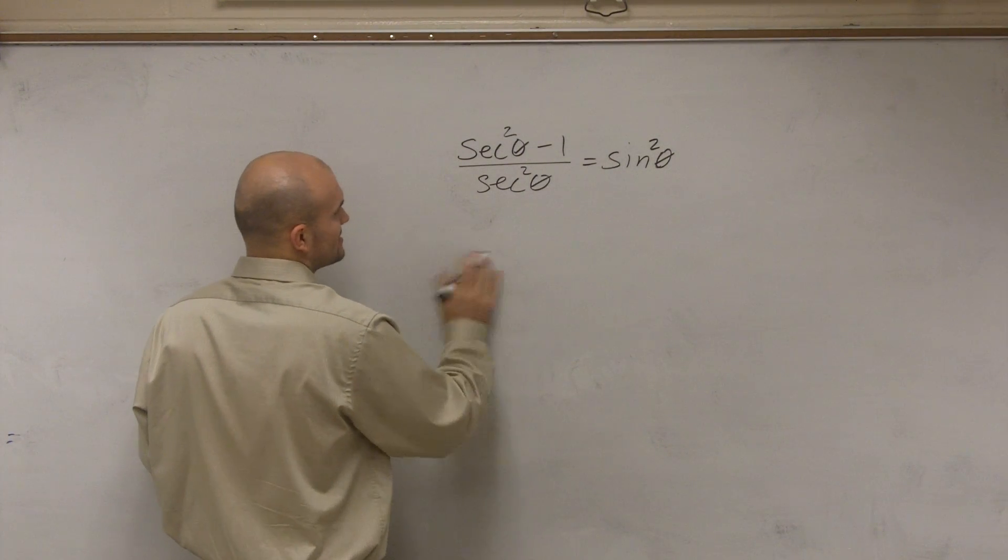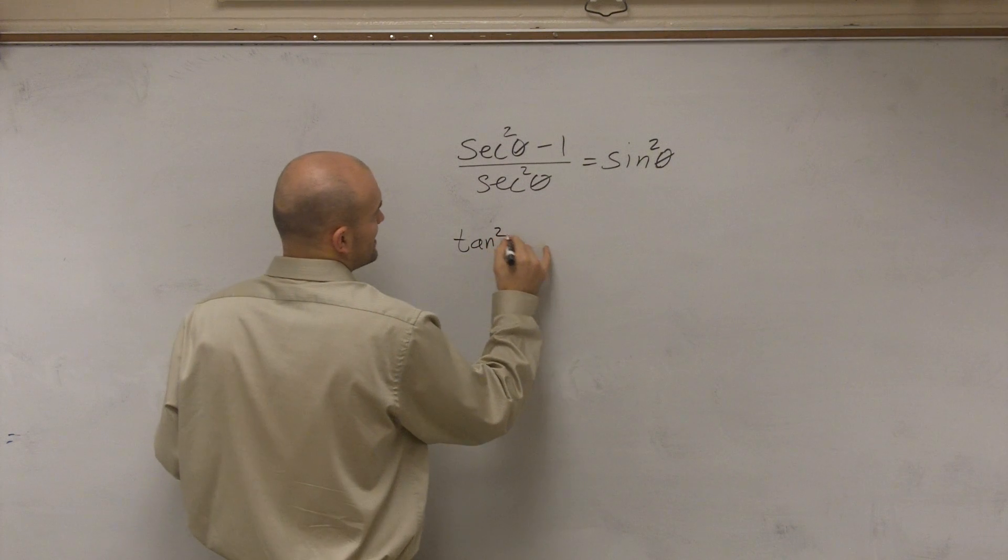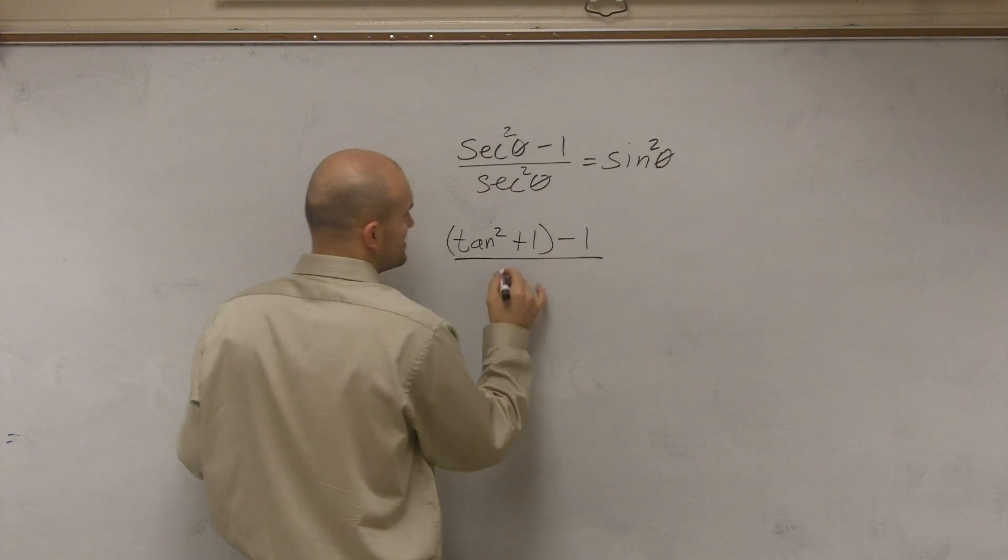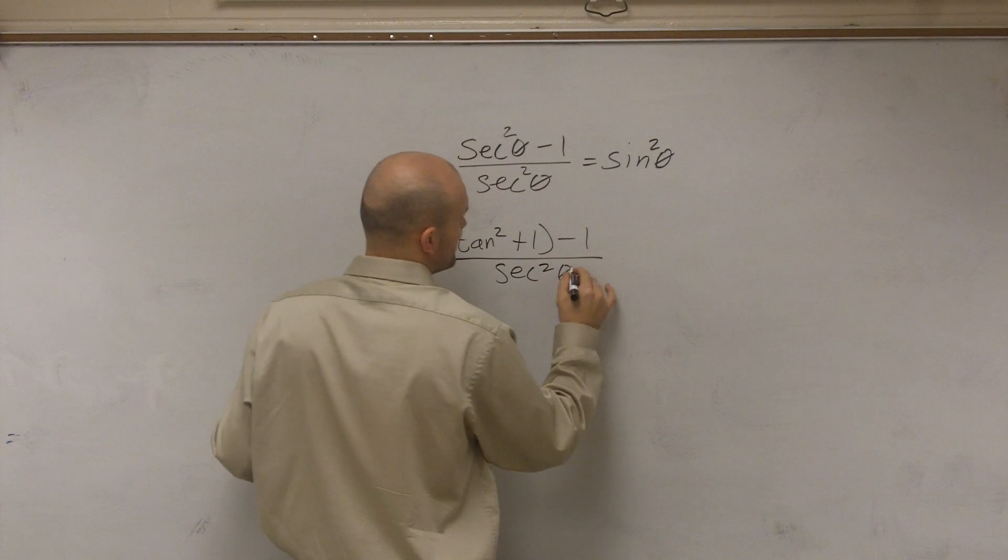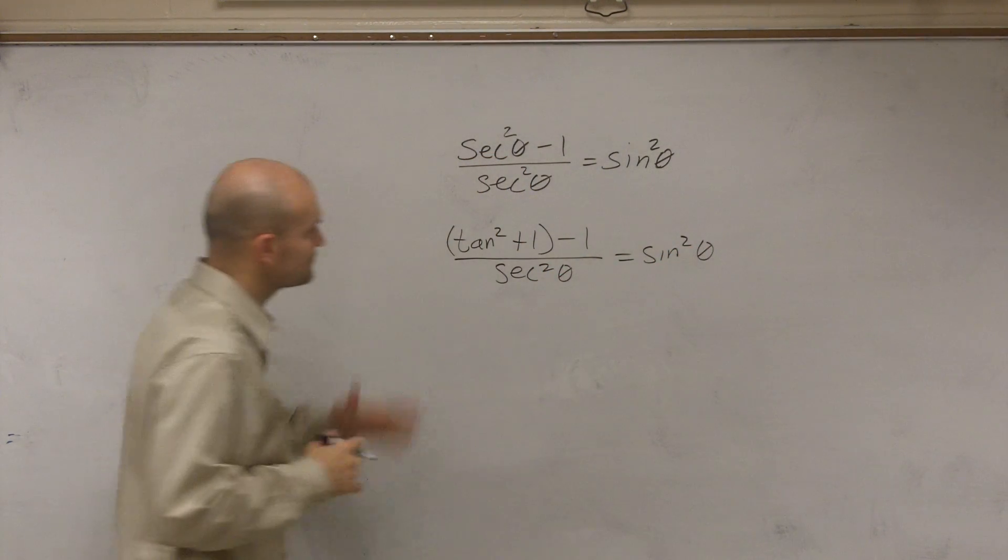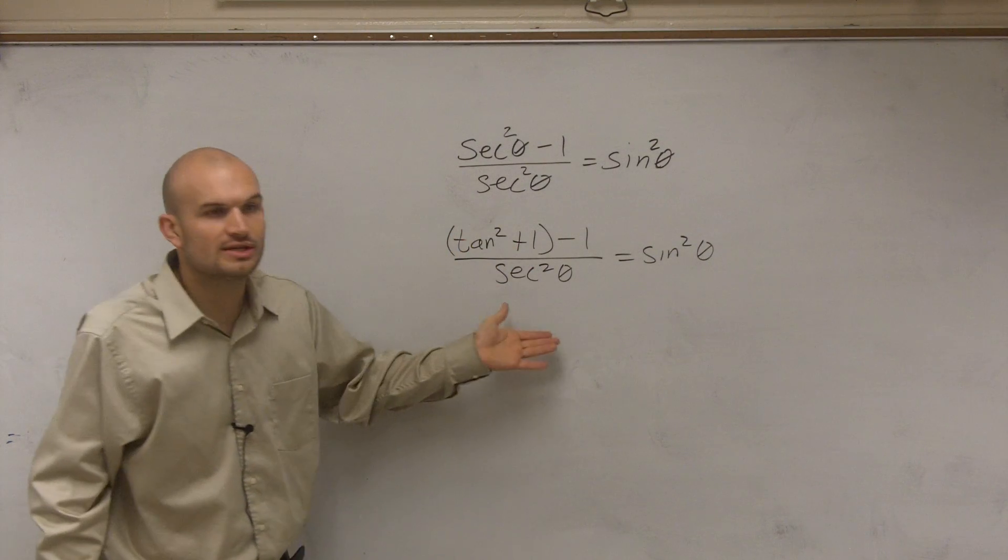So I could rewrite this as tangent squared plus 1 minus 1 divided by secant squared of theta equals sine squared of theta. Now, you might say, well, why don't you convert the other sine squared, right?